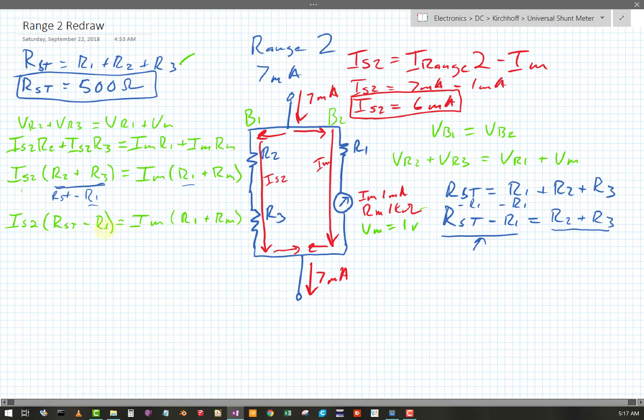Okay, so now I know shunt 2's current. I know Rstotal. I don't know R1. I know my meter current, don't know R1, and I know my meter's resistance. So the only unknown I have is R1. I'm going to solve for it. So I'm just first going to distribute my terms.